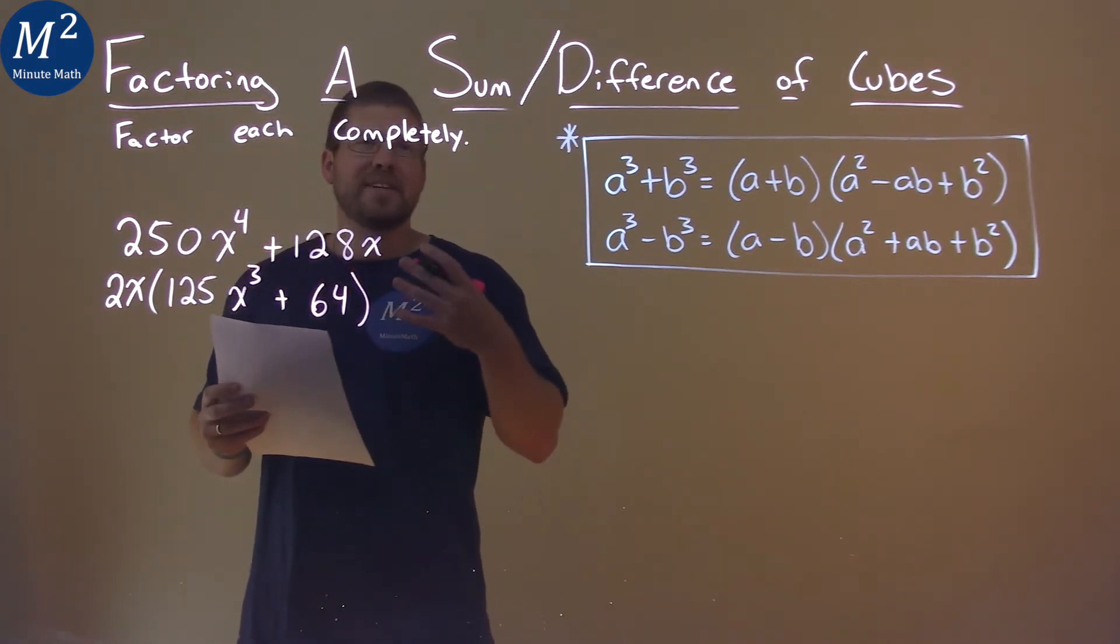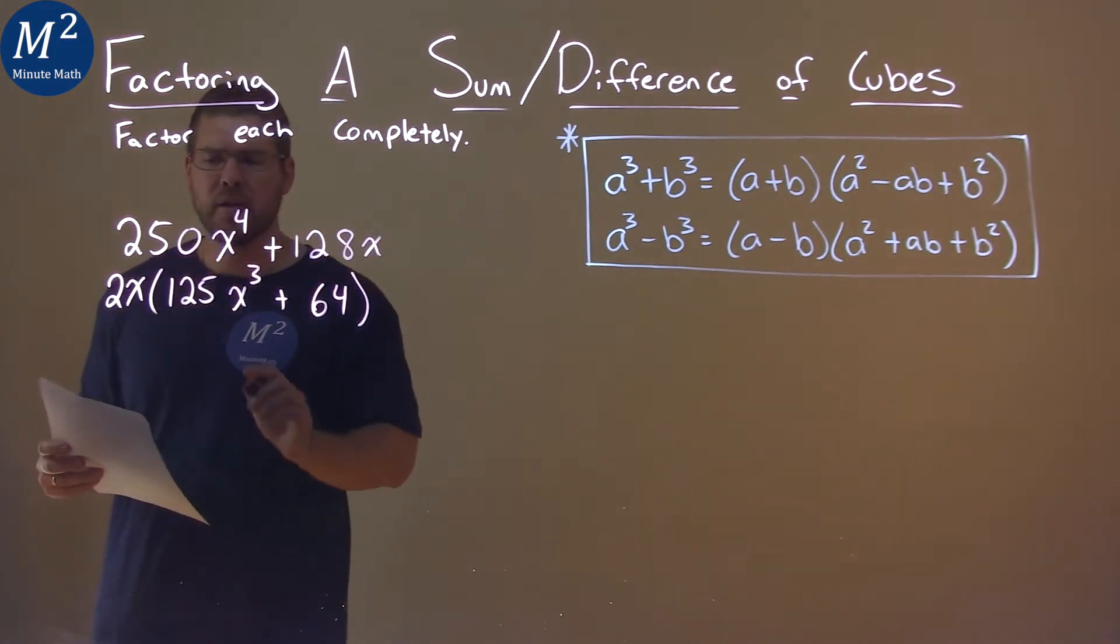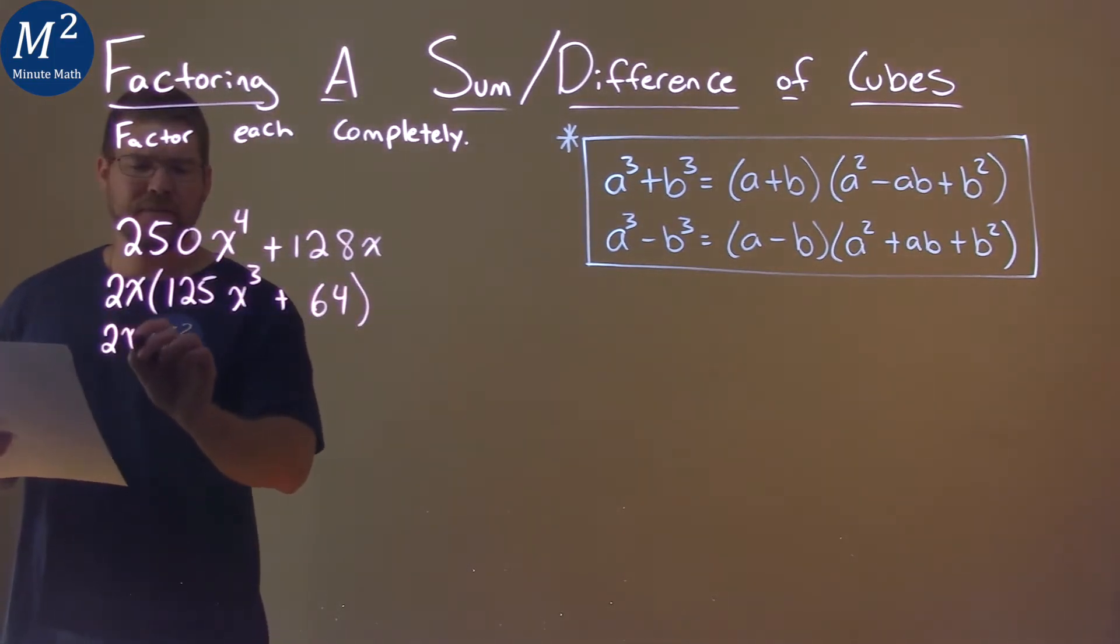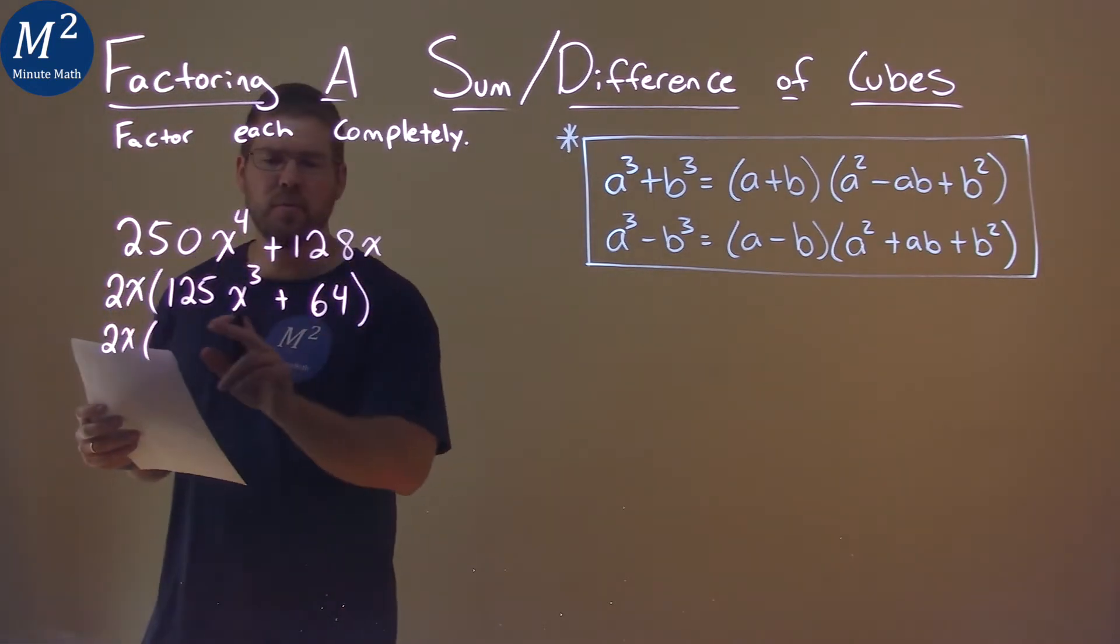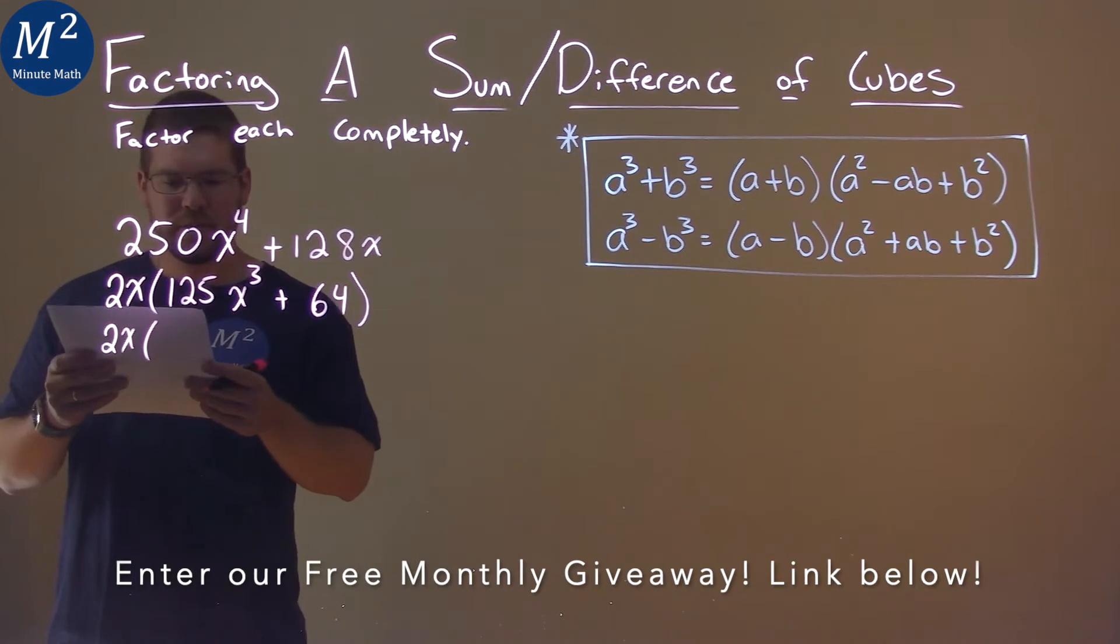Well, we now want to use the sum of cubes formula here. The 2x is still on the outside, so I'm going to leave it there, and let's see if I write these two parts here as something cubed. Well, 125 is 5 cubed,